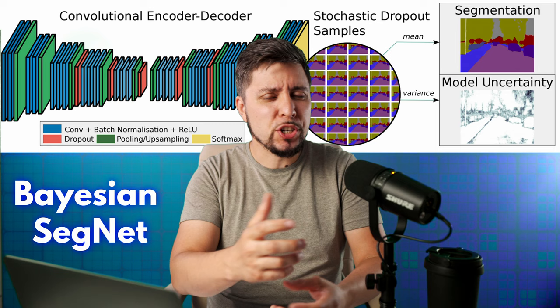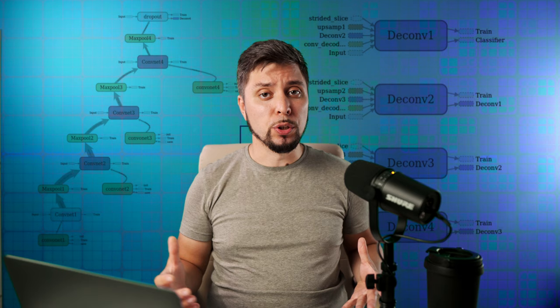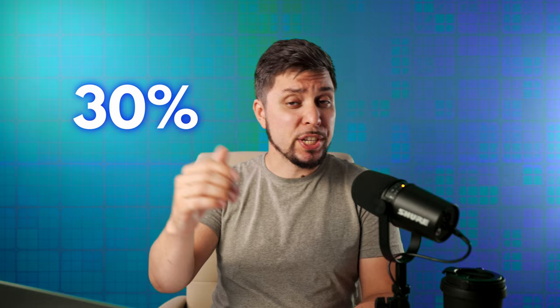Moving to the neural network architecture, they developed an architecture based on SegNet. It has 4 layers in the encoder and the same number in the decoder. The most interesting feature is that it also includes a dropout layer between the last encoder and the first decoder layer, which drops 30% of the units to measure how uncertain the model is.